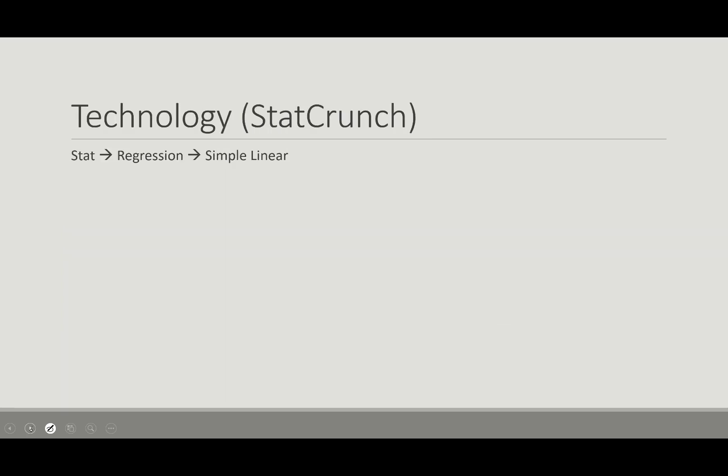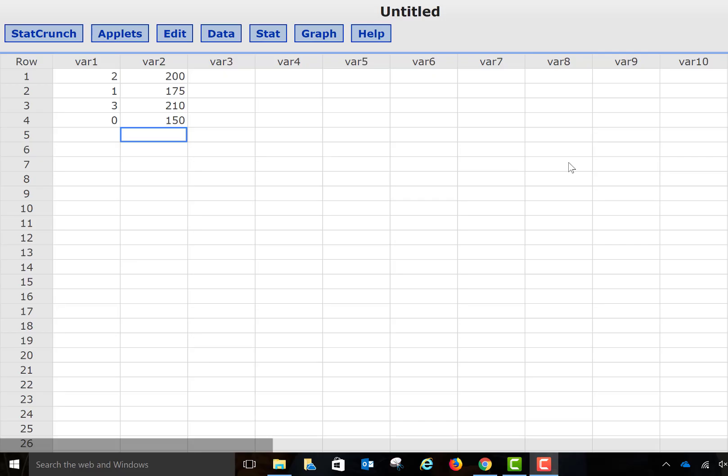Now, not that fun to do the calculation by hand, so we're going to go into StatCrunch and see how we can use StatCrunch to make those computations much quicker. All right, so I've opened up StatCrunch here, and I have my data values entered—my number of children and the amount spent on groceries—and we are going to look at how can we make StatCrunch compute that regression equation for us so we don't have to do it by hand.